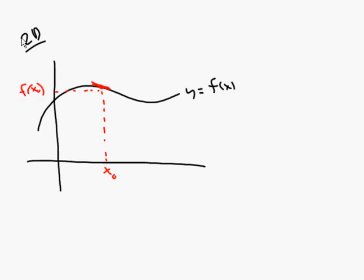The tangent line at the point where x equals x₀ would be y equals f prime of x₀ times x minus x₀ plus y₀. That's your point-slope form of a line.